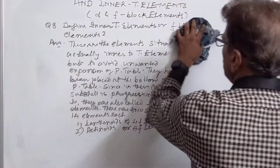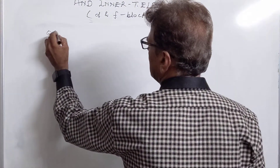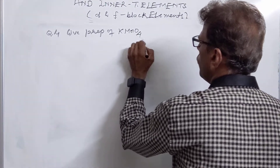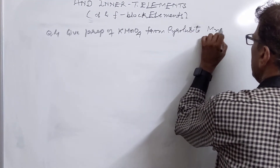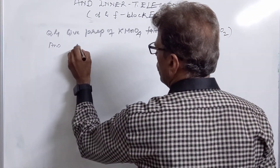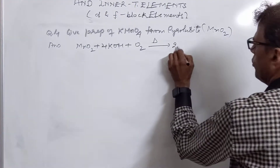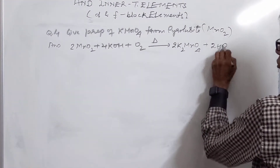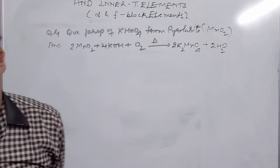Question number 4: give the preparation of KMnO4 from pyrolusite. Pyrolusite is an important ore of manganese; it is MnO2. To prepare KMnO4, you take MnO2 and heat it with KOH and O2: 2MnO2 + 4KOH + O2 → 2K2MnO4. This gives potassium manganate.